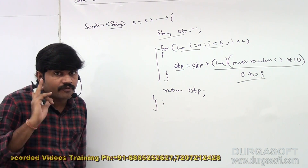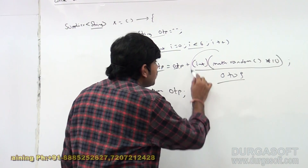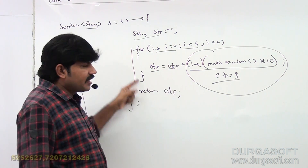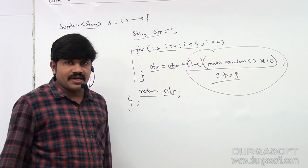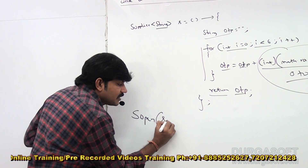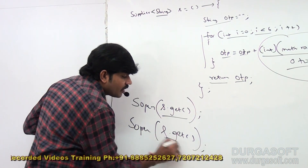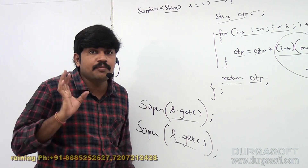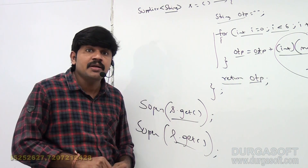Observe very carefully. The for loop executes six times. Every time it adds one random digit to OTP — first time, one digit; next time, another digit — six times total, giving a six-digit random OTP. To verify, System.out.println calling s.get() — every time it is going to generate a random six-digit OTP.